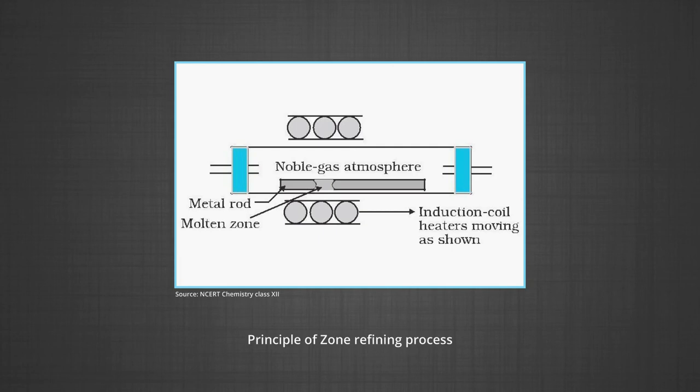As the heater moves forward, the pure metal crystallizes out of the metal and the impurities pass into the adjacent molten zone. The process is repeated several times and the heater is moved in the same direction. At one end, impurities get concentrated and the other end is cut off.